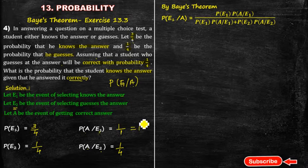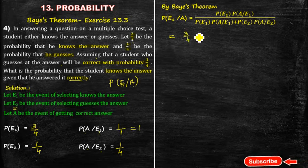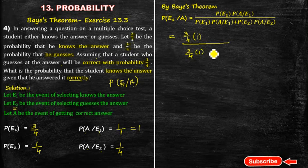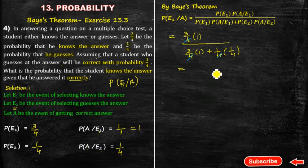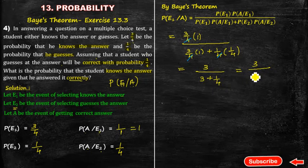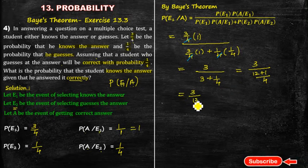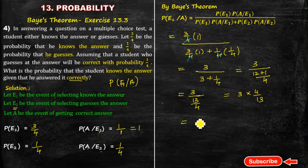Now I am using the Bayes' theorem concept. Probability of E1 given A equals P(E1) times P(A|E1) divided by [P(E1) times P(A|E1) plus P(E2) times P(A|E2)], which is (3/4 times 1) divided by (3/4 times 1 plus 1/4 times 1/4). Simplifying: 3/4 divided by (3/4 plus 1/16). The common factor 1/4 cancels, giving 3 divided by (3 plus 1/4), which equals 3 into 4 divided by 13, giving 12/13. That is the answer.